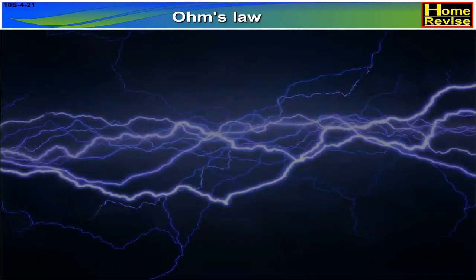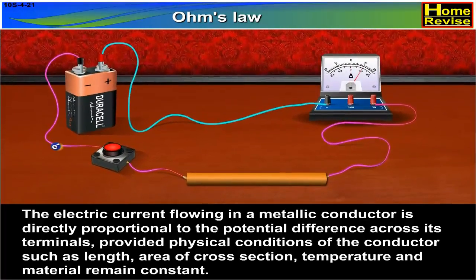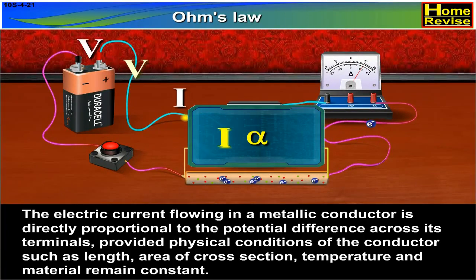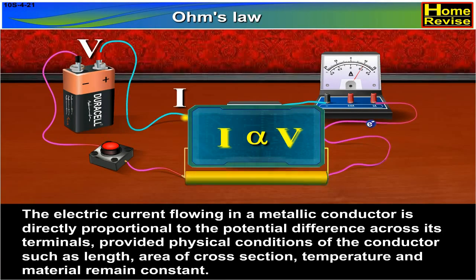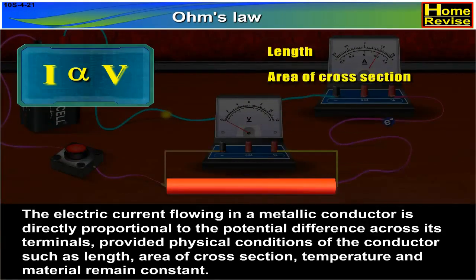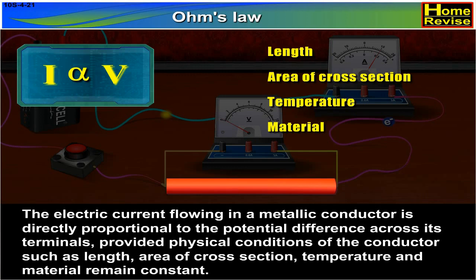Ohm's law. The electric current flowing in a metallic conductor is directly proportional to the potential difference across its terminals, provided physical conditions of the conductor, such as length, area of cross-section, temperature, and material, remain constant.